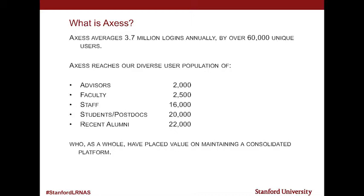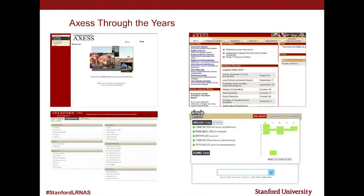To give you a look at what it looked like through the years — this is our very first Access from 2001. It was a couple pictures, not a lot of content. And then moving forward in time to 2004, we have really static blue links. It looks like a PeopleSoft interface, basically.